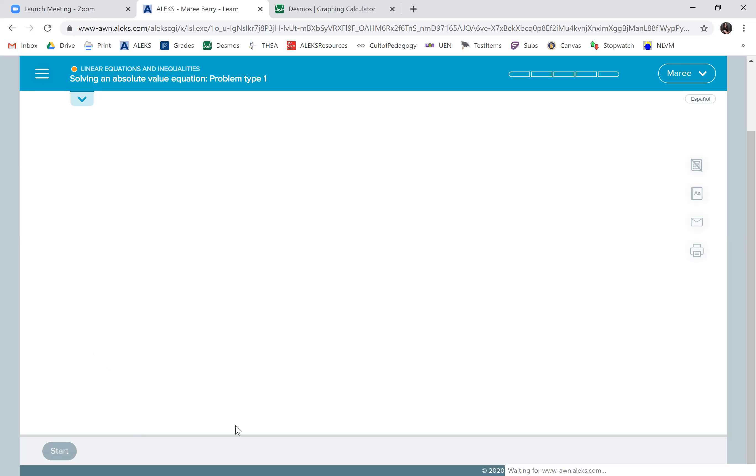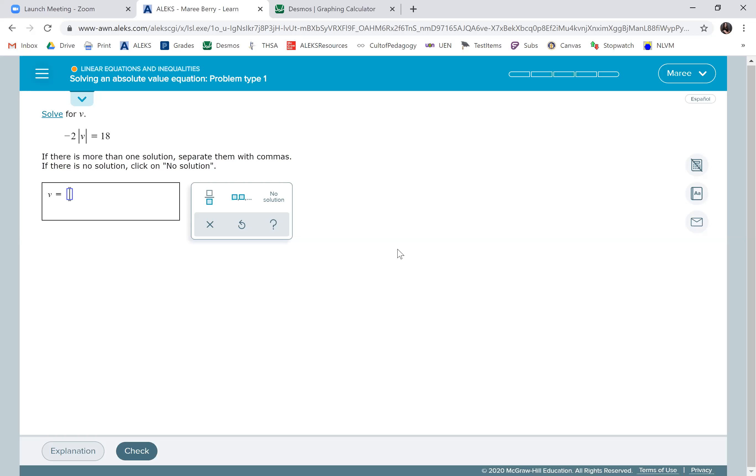Okay, so let's look at this example here. We'll write it down. We have negative two times the absolute value of V equals 18. So we can divide both sides by negative two. We're just trying to get rid of that negative two so the absolute value of V is all by itself. 18 divided by a negative number is negative nine.